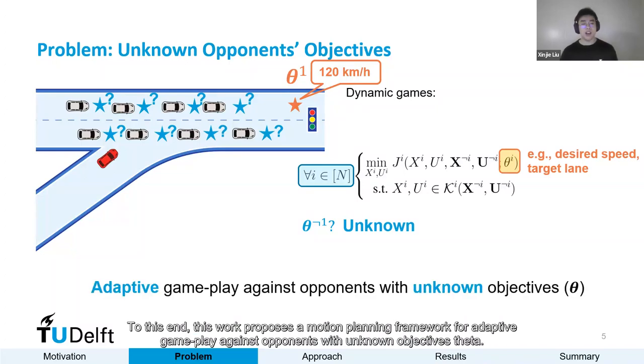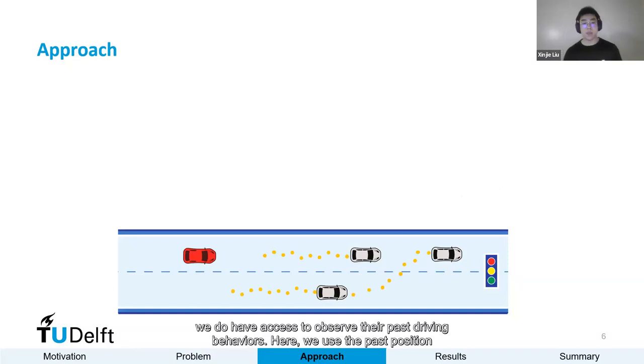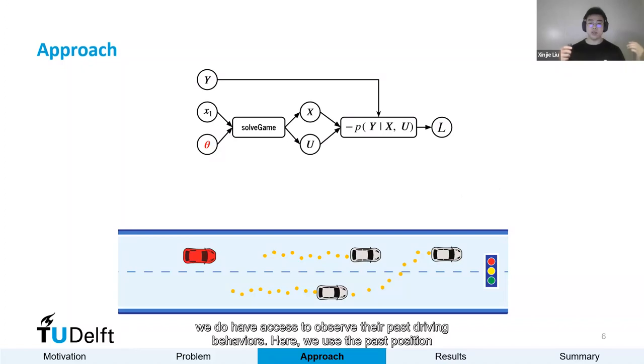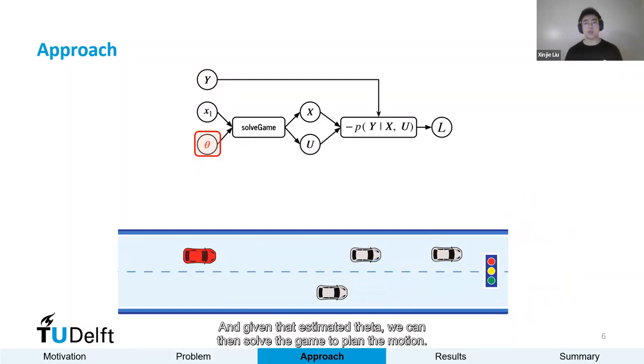To this end, this work proposes a motion planning framework for adaptive gameplay against opponents with unknown objective theta. Although we don't have objectives of other players from the beginning, we do have access to observe their past driving behaviors. We use the past position sequences of other players as observation y to estimate their objectives theta. And given that estimated theta, we can then solve the game to plan the motion.